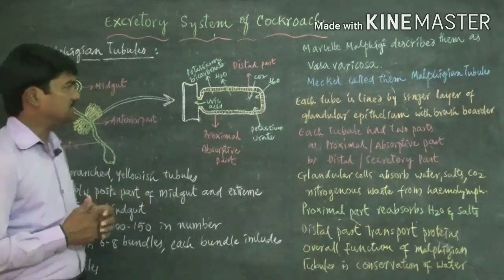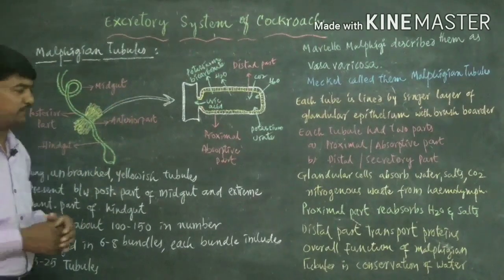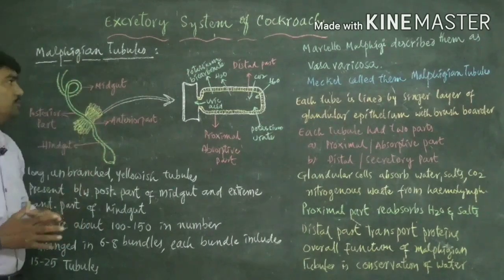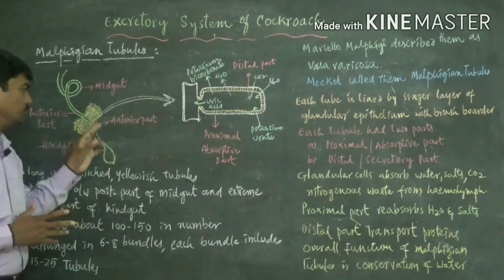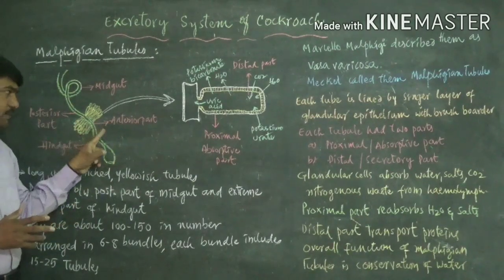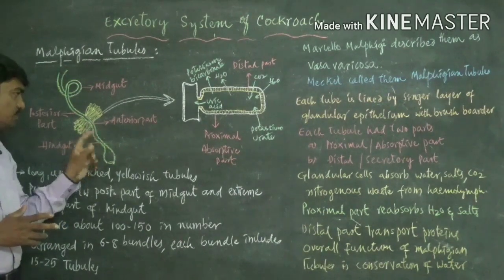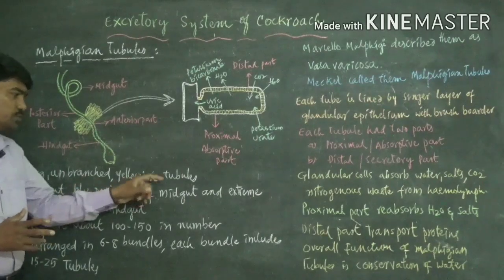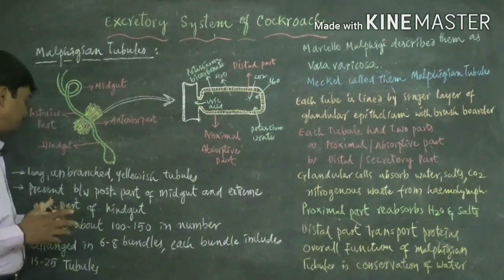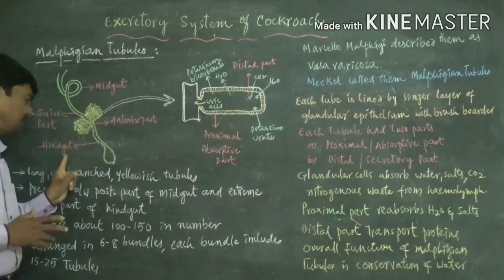The first component of the excretory system is the Malpighian tubules. Malpighian tubules are light yellowish, long unbranched tubule-like structures. They are present between the posterior part of the midgut and the anterior part of the hindgut.